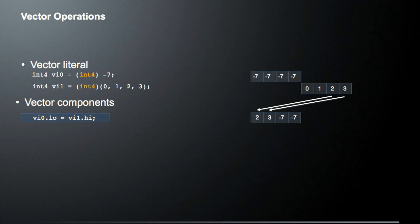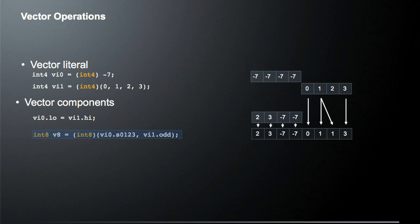One of the nice things about vectors is that you can select their components. OpenCL C has a very verbose set of vector component selects. For example, you can assign one vector's .low component to equal another vector's .high component. You can also use .odd to get all the odd components of a vector, or .even to get all the even components. There is also a select routine to pick specific components such as 0 and 1. I highly recommend going to the spec to see all the variations.